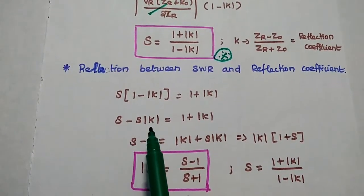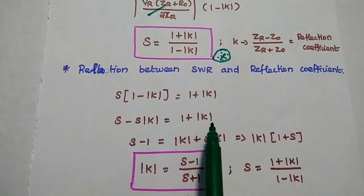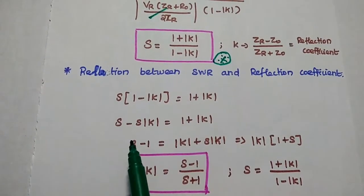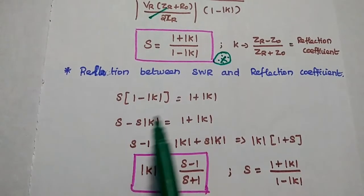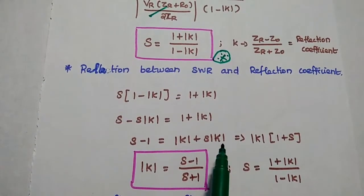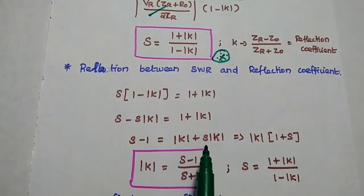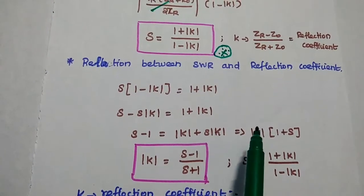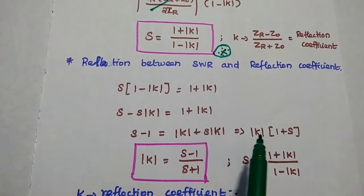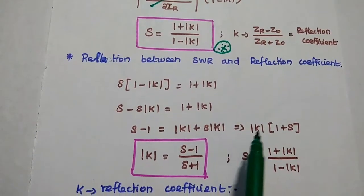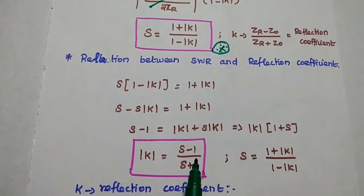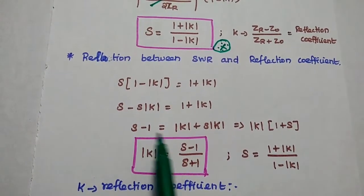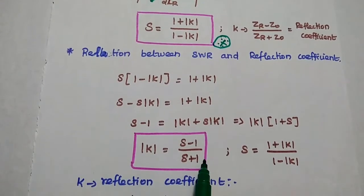Moving the K value to one side: S minus 1 equals K plus S times K. K is the common term, so we take it outside: S minus 1 equals K into S plus 1. Since we want the reflection coefficient in terms of S, we move S plus 1 to the denominator. Therefore, modulus of K equals S minus 1 divided by S plus 1. This is also a very important relation.